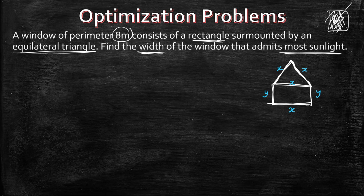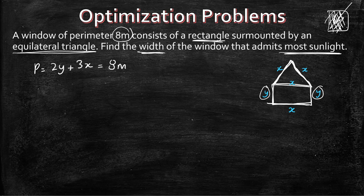The first thing we are given is that the perimeter is 8 meters. So let's write our equation. The perimeter in this case is going to be 2y plus 3x. When you draw the picture it becomes very clear — you have 2 y's on the sides and 3 x's. So that is equal to 8 meters.